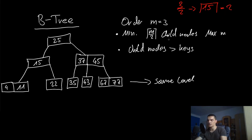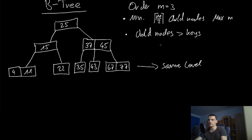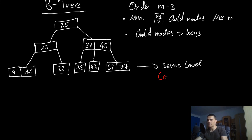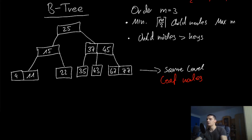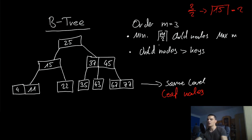Another very important rule is that all leaf nodes must be at the same level. You cannot have some leaf nodes at one depth and others at a different depth. Those are essentially the criteria for a B-tree, and as soon as any criterion is violated, we need to rebalance and restructure the tree.